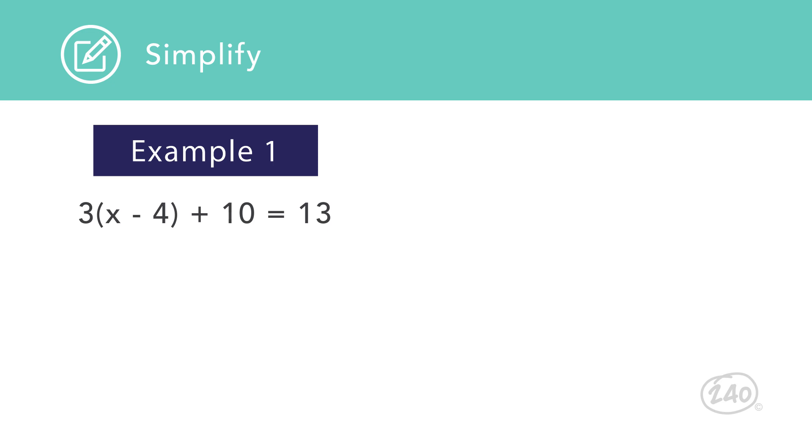The distributive property is a form of multiplication. According to the order of operations, this property should be applied before combining like terms, which is a type of addition and subtraction.